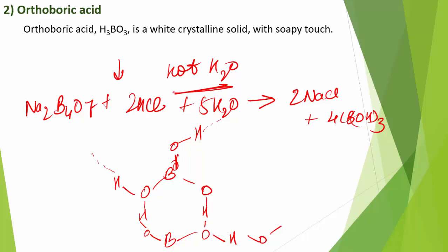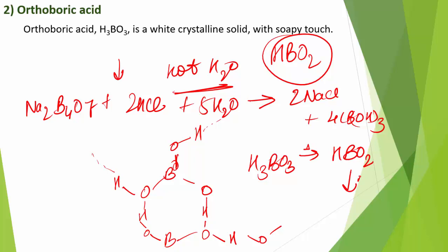Boric acid is a weak monobasic acid — not a protonic acid but acts as a Lewis acid by accepting a hydroxyl ion electron pair. When orthoboric acid H₃BO₃ is heated above 370 K, it gives metaboric acid HBO₂. Further heating of HBO₂ gives boric oxide B₂O₃.